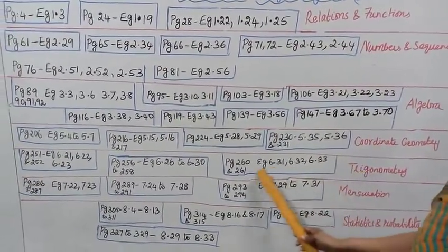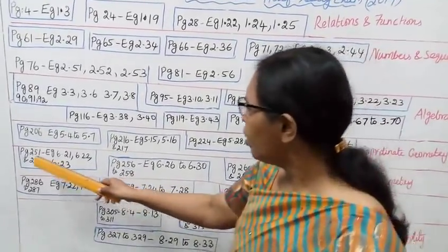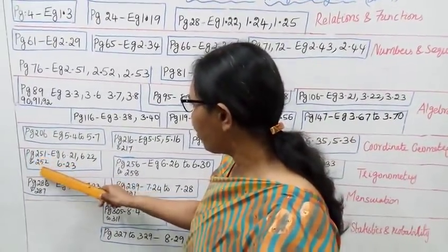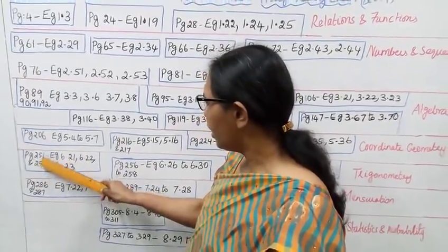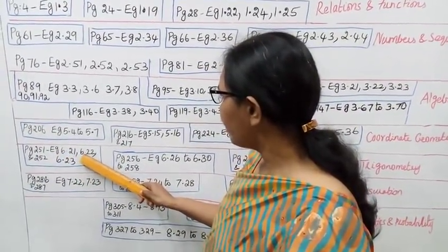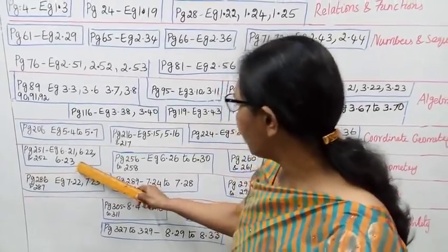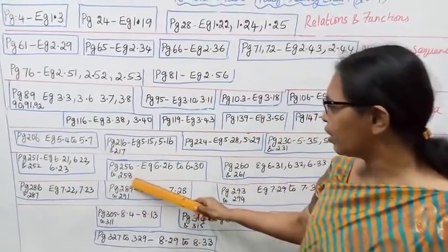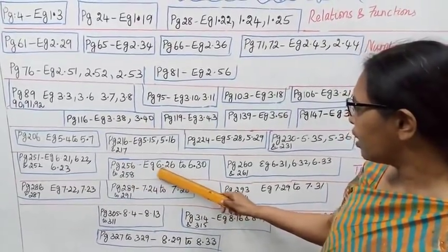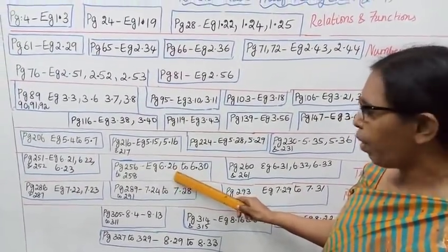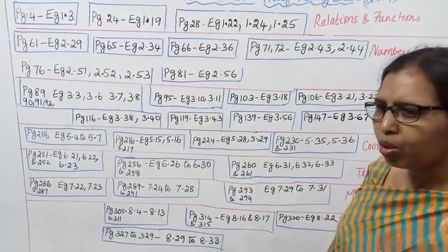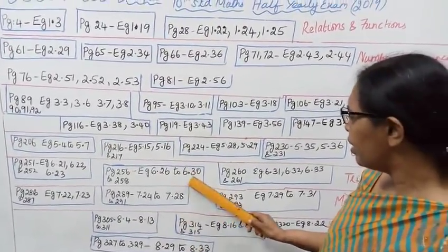Next is Trigonometry. Page 251, example 6.21; page 252, examples 6.21, 6.22, 6.23. Page 256 to 258, examples 6.26 to 6.30: 26, 27, 28, 29, 30.